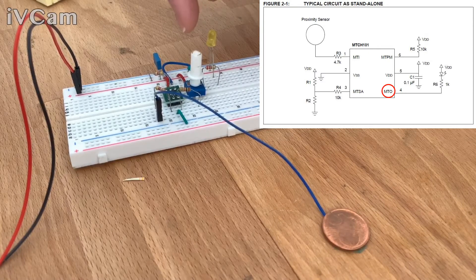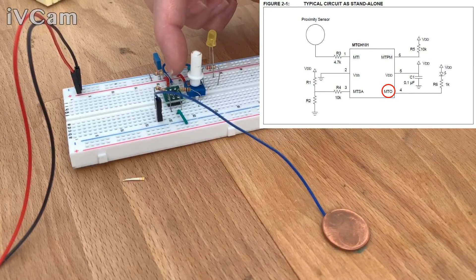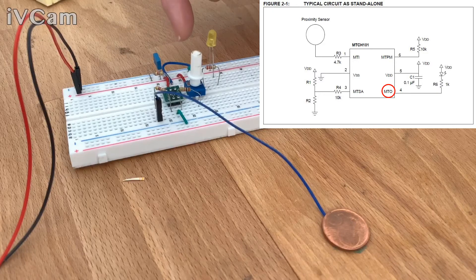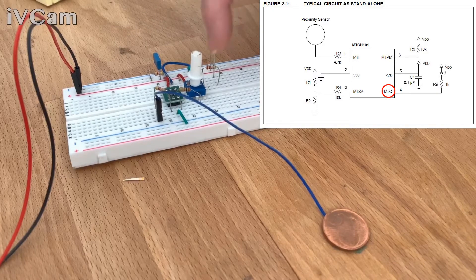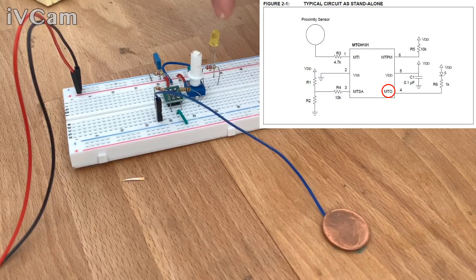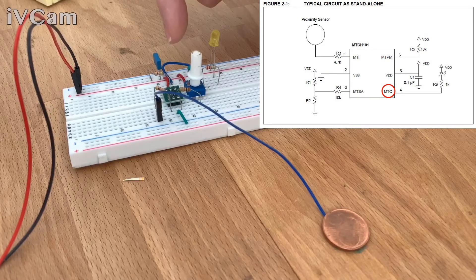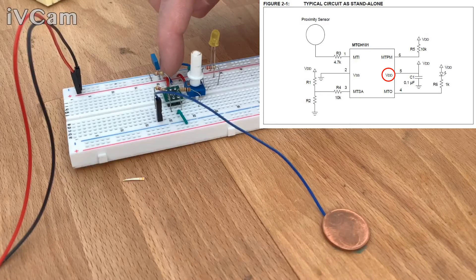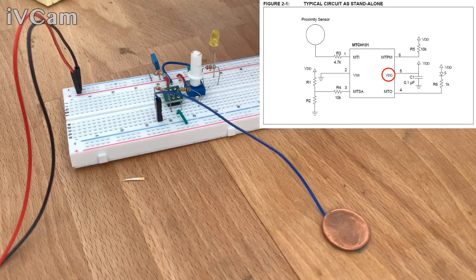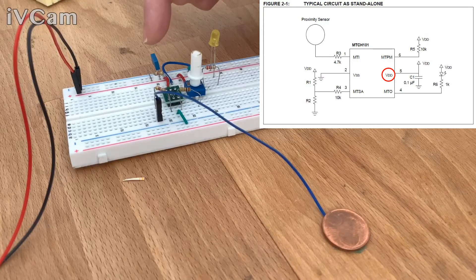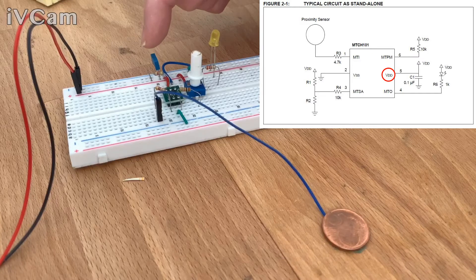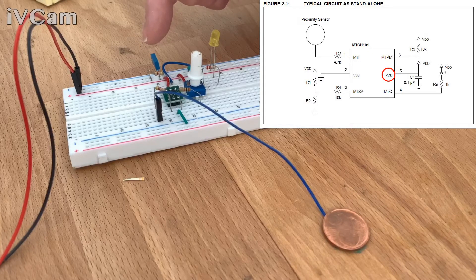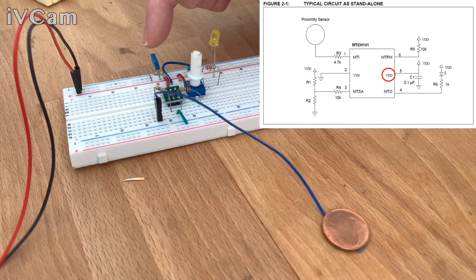Then moving on, in the fourth pad, which is here, we have the output, which is called MTO, and it's connected to the LED through a 220 ohm resistor. Then we have VDD here, which is the positive, which is coupled with the decoupled capacitor here, which is 0.1 microfarads.